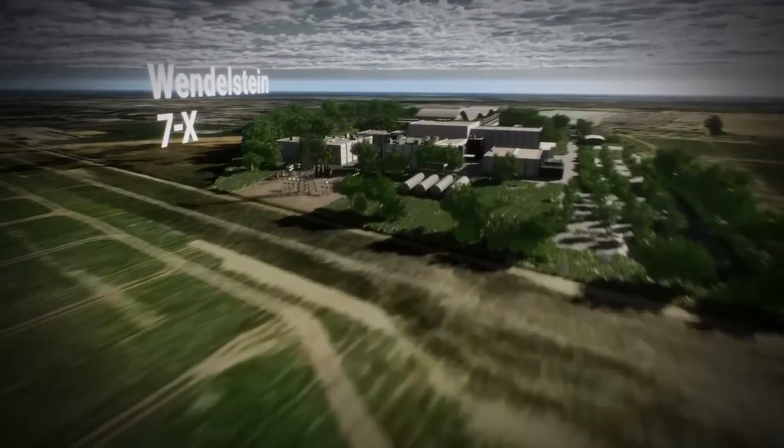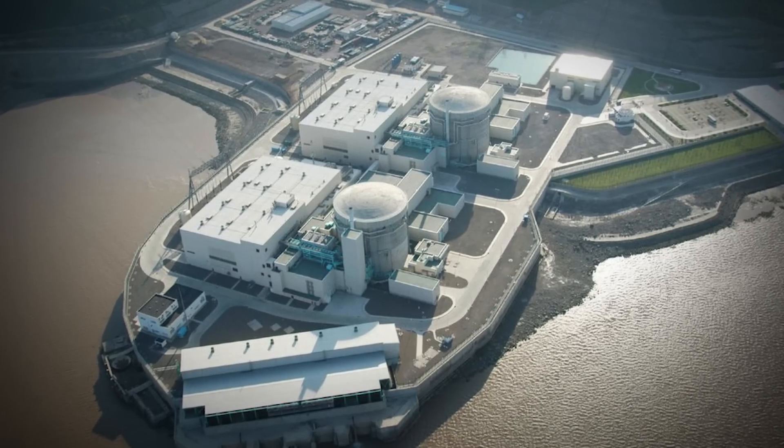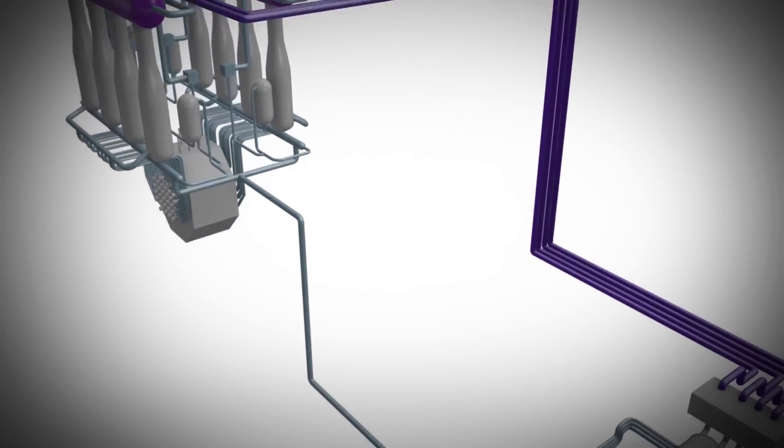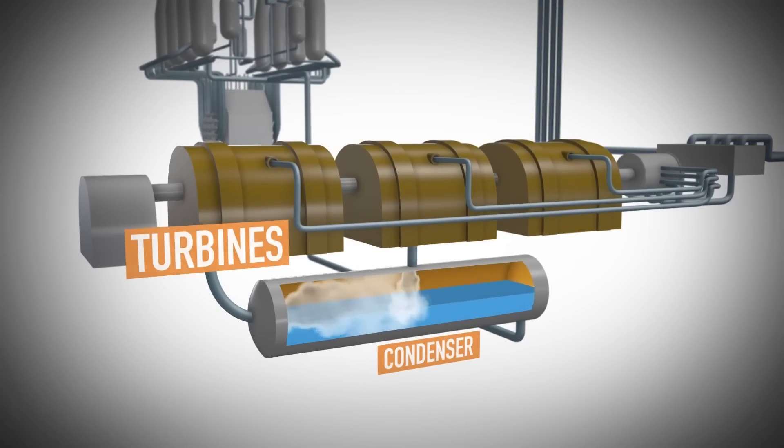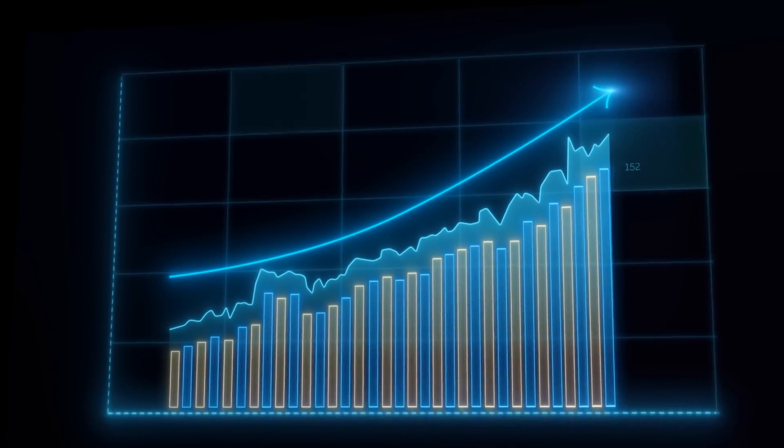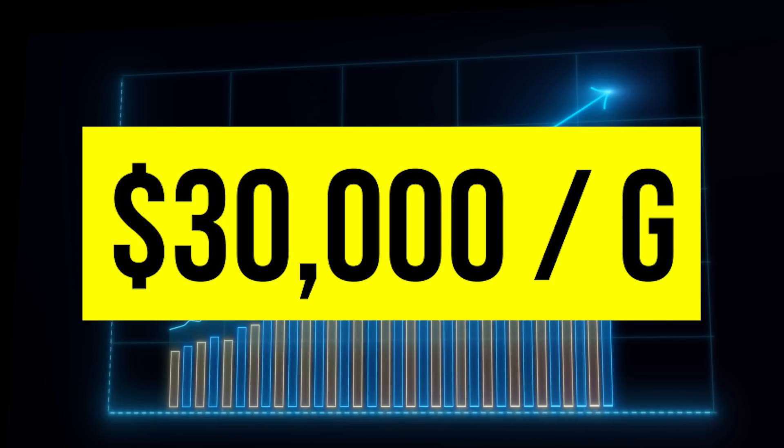Specifically, the tritium for nuclear fusion research comes from the 19 CANDU reactors in Canada, which filter out the unwanted tritium at a combined rate of 500g per year. As it turns out, this unwanted by-product worked out pretty well for the owners of these reactors, as tritium has since become one of the most expensive things in the world, at over $30,000 per gram.